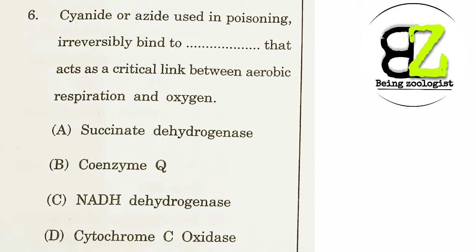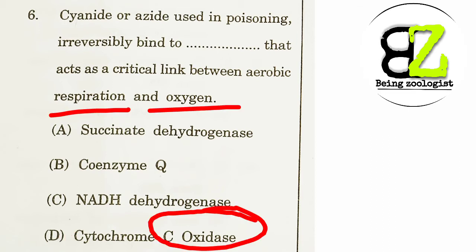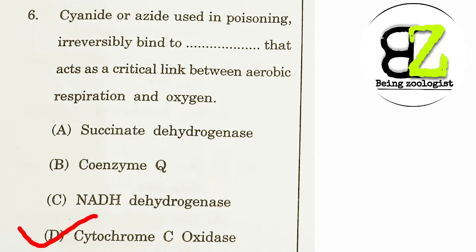Cyanide and azide, used in poisoning, irreversibly bind to what, which acts as a critical link between aerobic respiration and oxygen? The option given is cytochrome c oxidase. Since this question is about aerobic respiration and oxygen, the only oxidase enzyme here is cytochrome c oxidase, so our answer should be option D — cytochrome c oxidase.